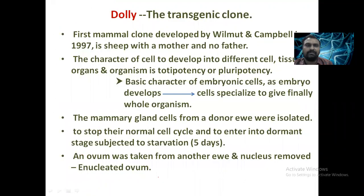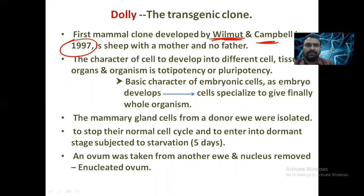Dolly was first produced in 1997 by Scottish scientists E.M. Wilmot and Campbell, through asexual reproduction of the sheep.